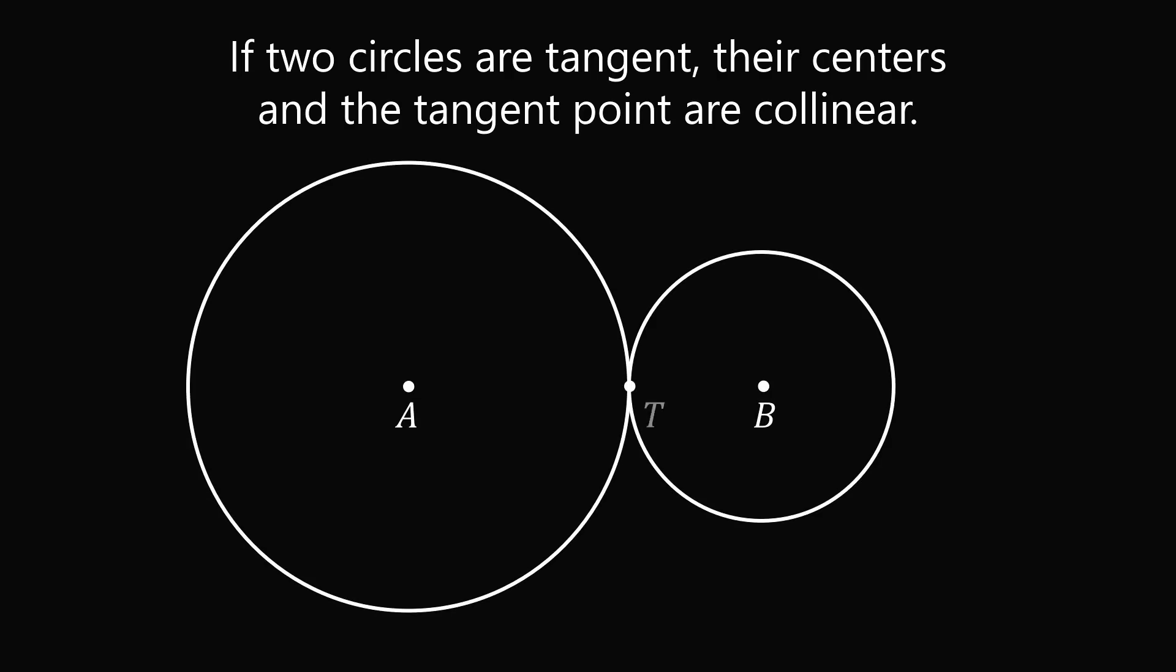and a tangent point T. We want to show that ATB is a straight line segment, or that ATB is equal to 180 degrees. So here's how we're going to do that.